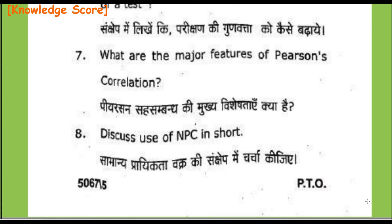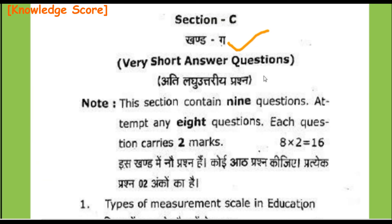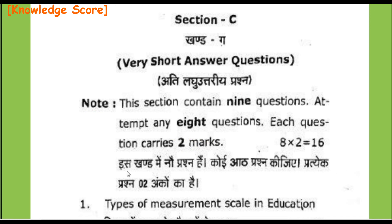Now we will discuss Section C — Khand Ga. Very short answer questions — Atilaghu utriya prashna. Note: This section contains 9 questions. Attempt any 8 questions. Each question carries 2 marks. 8 into 2 equals 16. So Section C is of 16 marks — Is khand mein nau prashna hai; koi 8 prashna kijiye; pratyek prashna do ank ka hai.